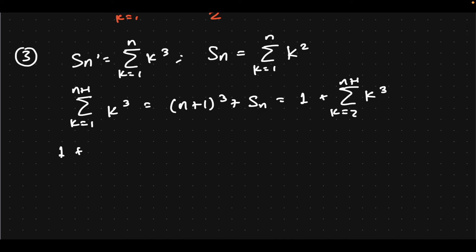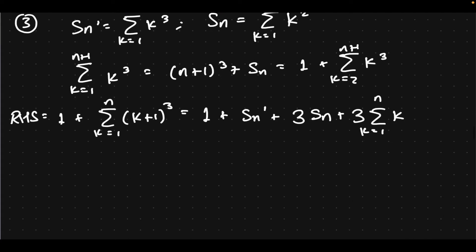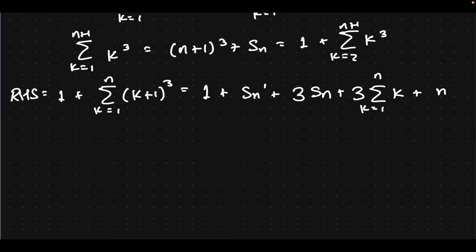And this would be, as the right-hand side, 1 plus — you can change the index of summation here — k plus 1 cubed. And then just cubic expansion for this: 1 plus we have a k cubed, so that would be Sn prime being summed up, and then 3k squared — so that's 3 times Sn — plus 3k, that's 3 times 1 squared times k, 3 times sum k equals 1 to n of k, and then the 1 being summed from 1 to n, which would be n. I'm skipping a lot of steps — pause the video if you want to take time to ponder upon this.